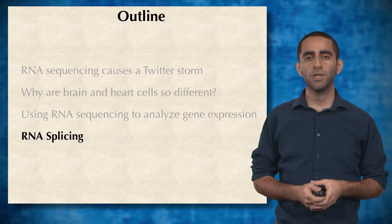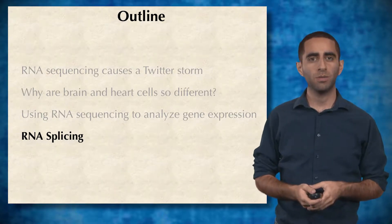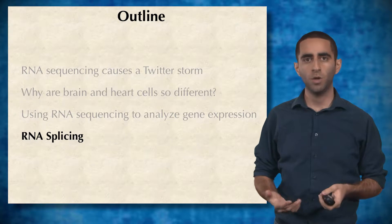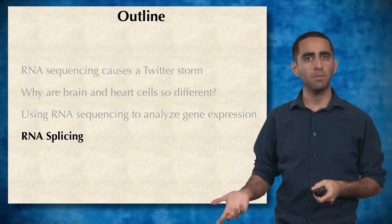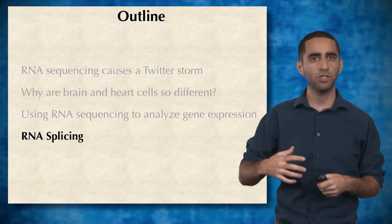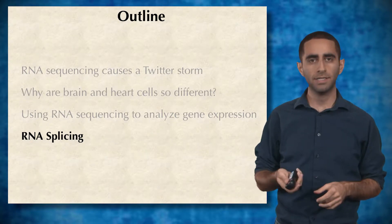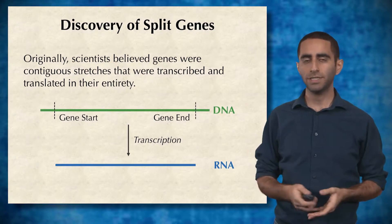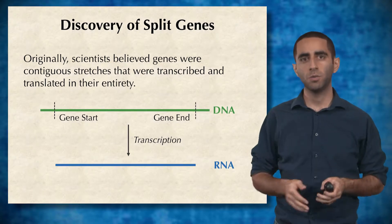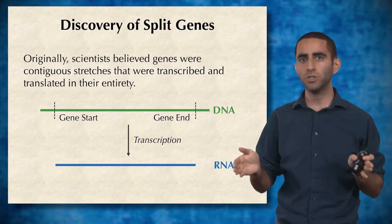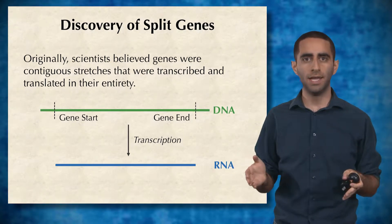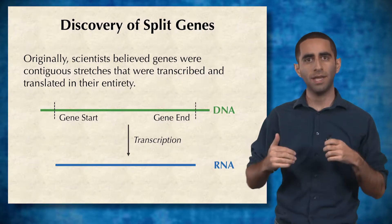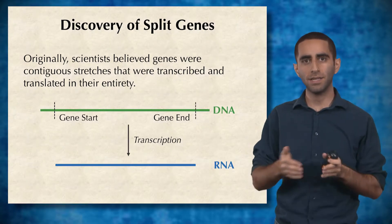It turns out that we actually oversimplified the problem for you a little bit, and it turns out that this assumption that we made, where all RNA molecules from a given gene should look identical, is not entirely true. Originally, scientists believed that a gene was just a contiguous stretch of DNA, and that this stretch of DNA was transcribed and translated entirely.